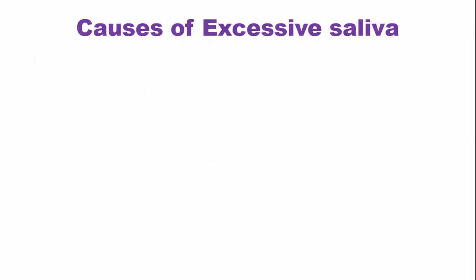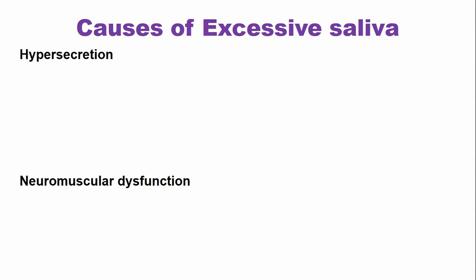The etiology of excessive saliva formation is broadly classified into two types. Either there is hypersecretion, meaning more production of saliva by the salivary glands, or there is a neuromuscular dysfunction, meaning salivary production is normal but swallowing of the saliva is compromised due to some neuromuscular disease.